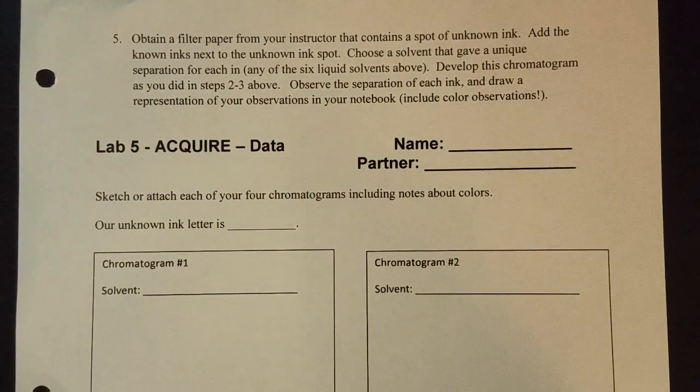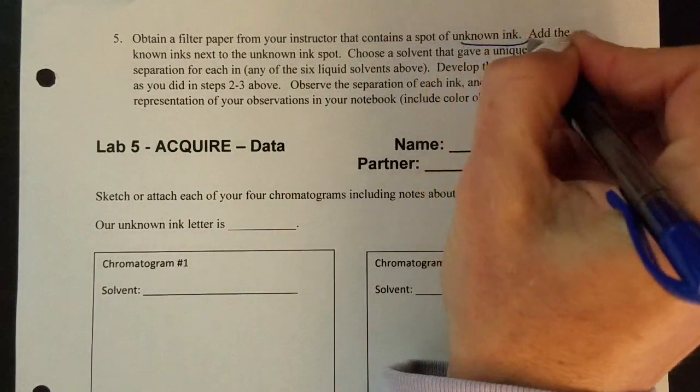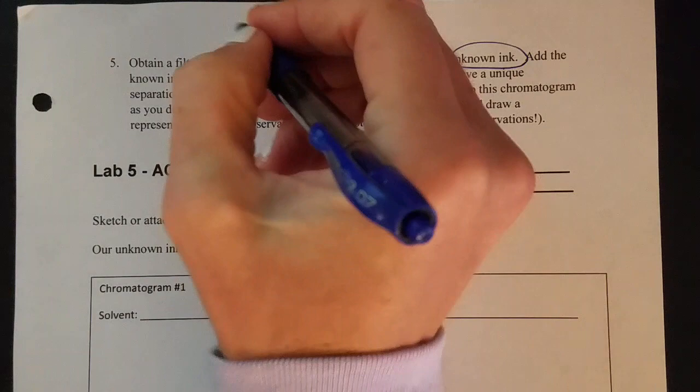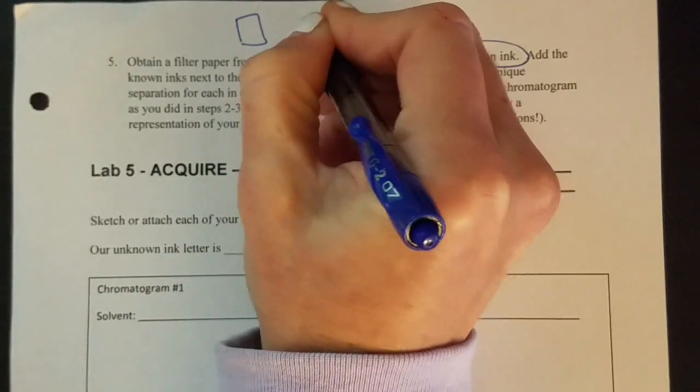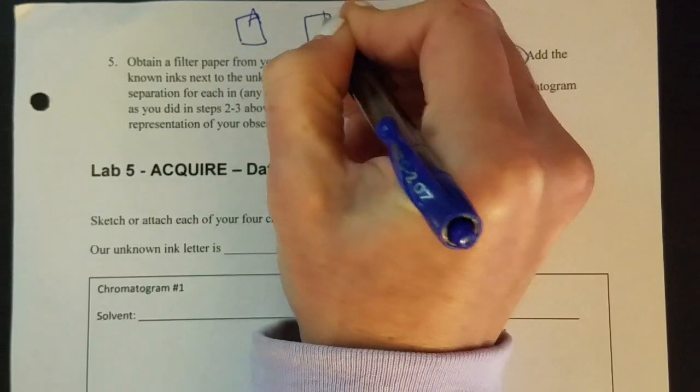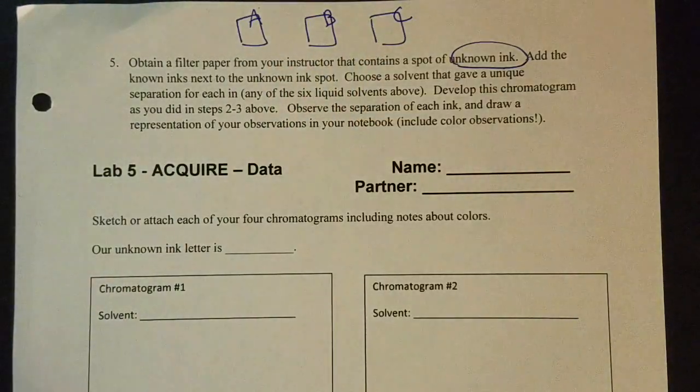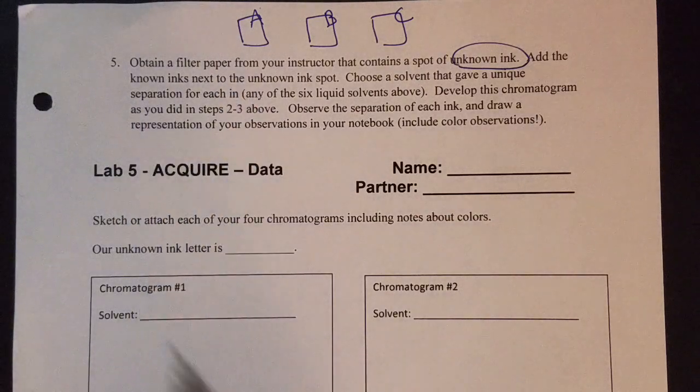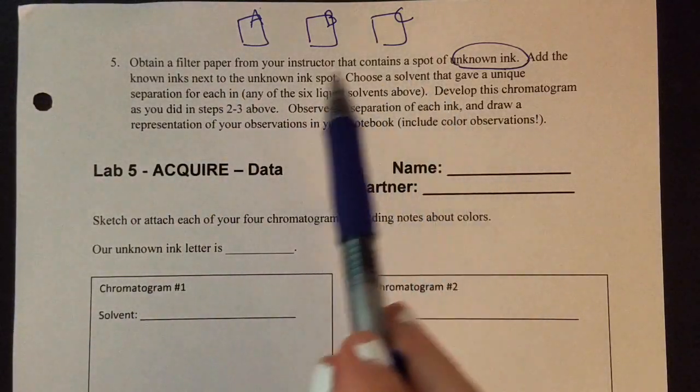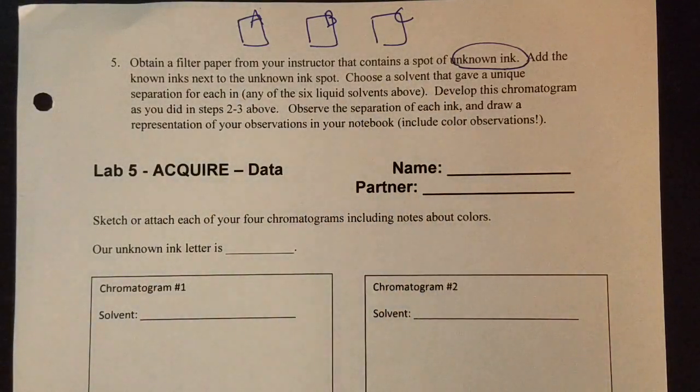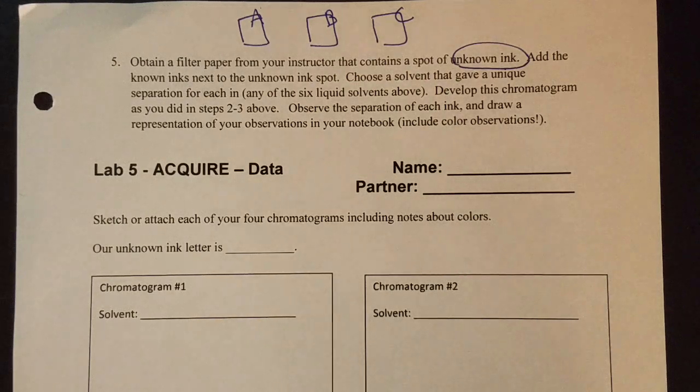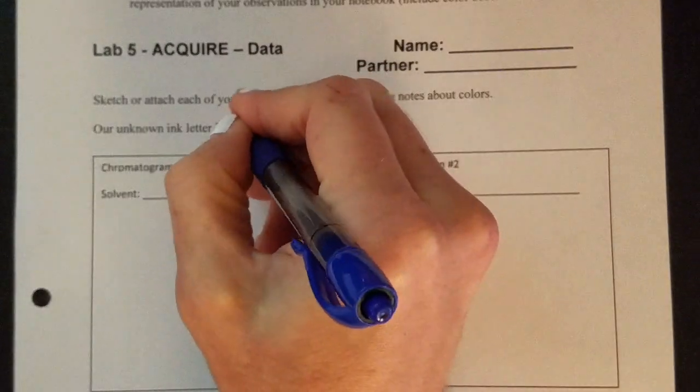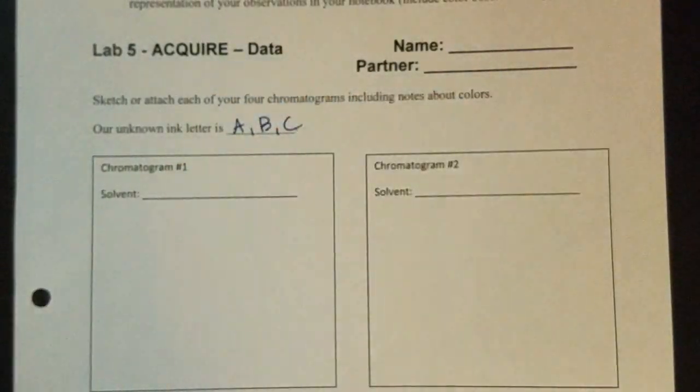So the next segment that you'll see in the videos will include an unknown ink. And again, there's going to be three unknown inks. So at this point in the video, you'll see three different papers. One with unknown A, one with unknown B, and one with unknown C. So you'll see three spots plus an unknown spot. You'll observe that separation. You'll draw observations for one of them down here. So on this page here, your unknowns, you're going to do all three. You're going to do A, B, and C.